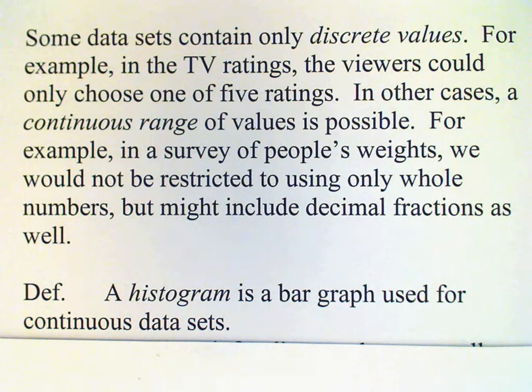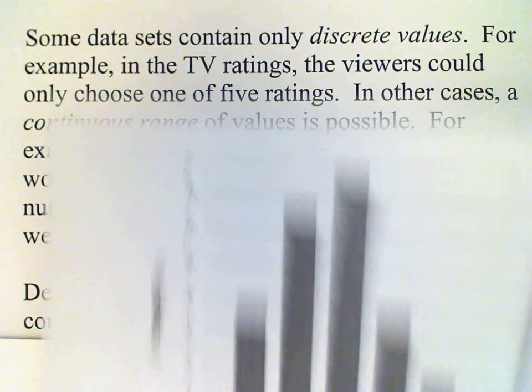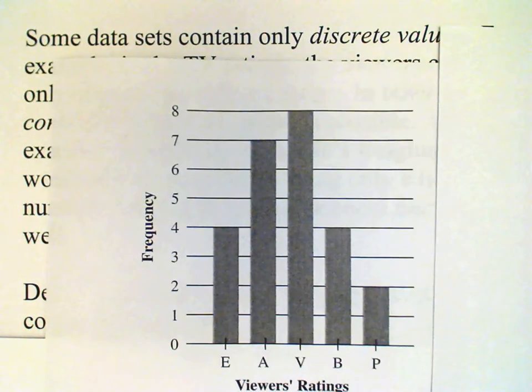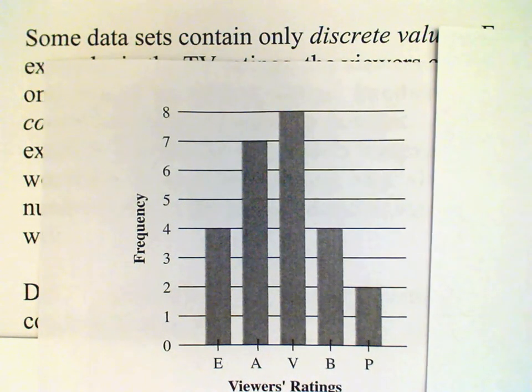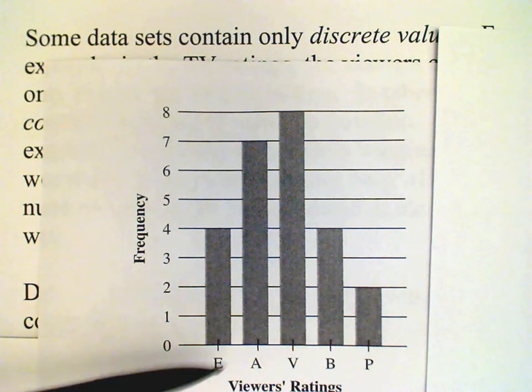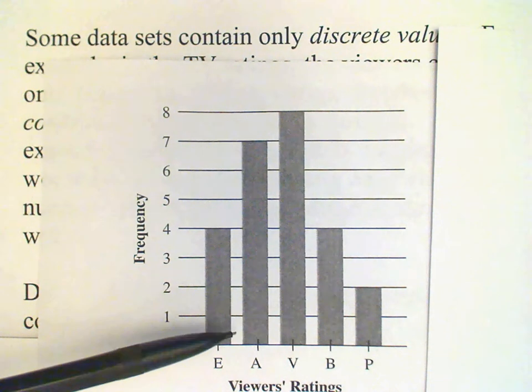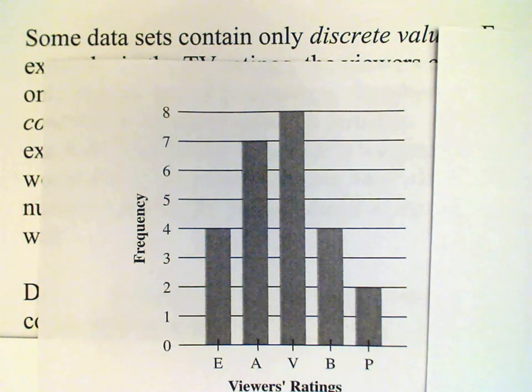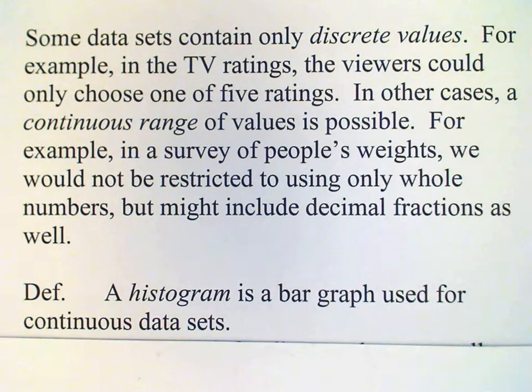You remember on the bar graph that we looked at for the TV ratings, we have the bars representing the frequency of the various responses, and we have a space between each of the bars. That's typical for bar graphs for discrete data sets. For histograms, though, we do not have spaces between the bars.